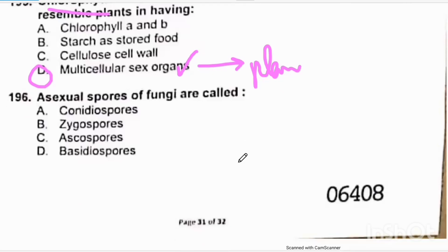Asexual spores in fungi are called conidiospores. They are formed in asexual reproduction. So correct option will be alpha.